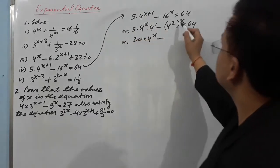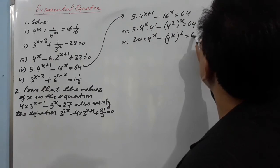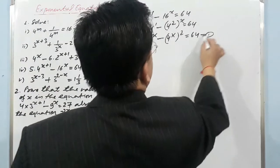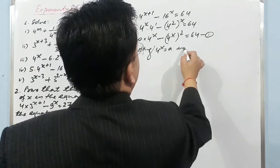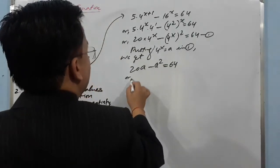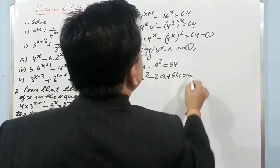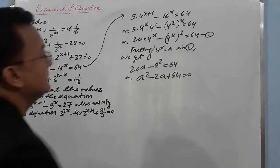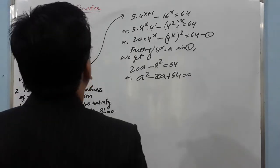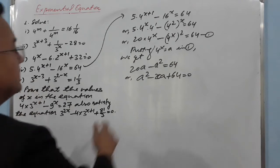We write (4^x)² = (4^x) whole raised to power 2. Putting 4^x = a, we get 20a − a² = 64, or a² − 20a + 64 = 0. Splitting: 64 = 16 × 4, so factors are (a − 16)(a − 4) = 0. You can then find the values of x very easily.